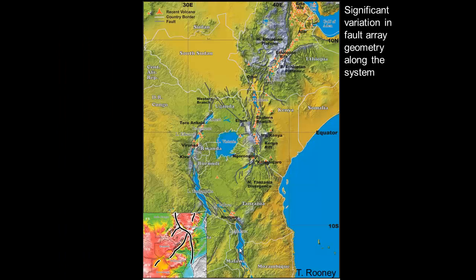The East African Rift varies quite a bit along strike, with the Afar triple junction in the north, volcanoes in the main Ethiopian Rift, and the eastern branch heading down through Turkana into Kenya. These rift basins in Kenya and Ethiopia are quite important for the study of human origins — as rift basins they accumulate lots of sediment that entombs fossils, and the volcanoes provide datable volcanic deposits. The rift steps over to a western branch through the edge of Congo down to Lake Tanganyika and Malawi.